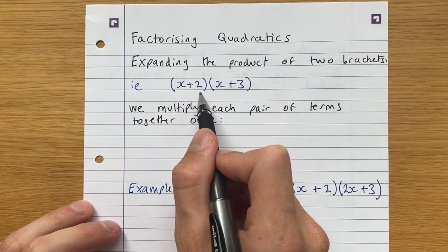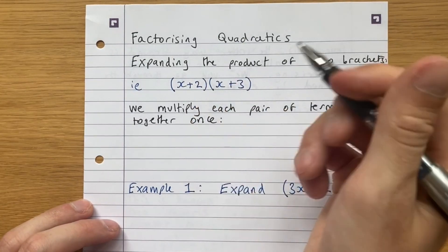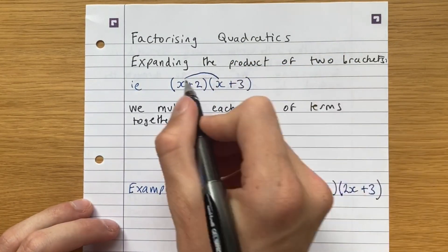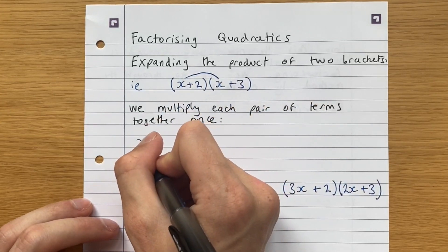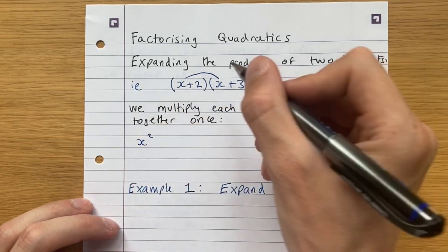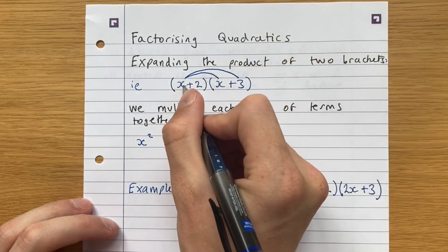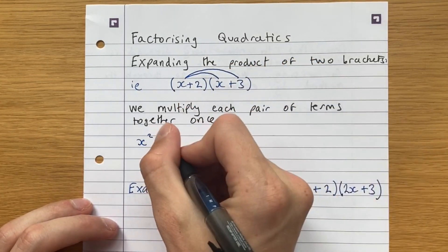So in the example of x plus 2 times x plus 3, what you do is you first, if you draw lines it can really help, so you multiply the x's together to give x squared. Now another line back here, x times 3 is 3x.